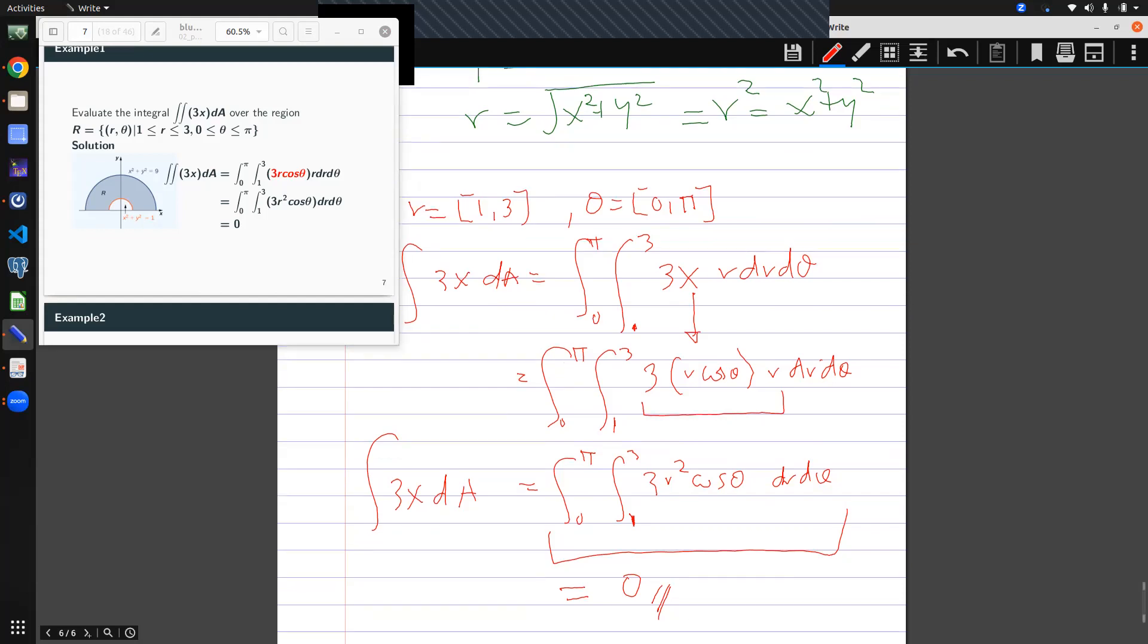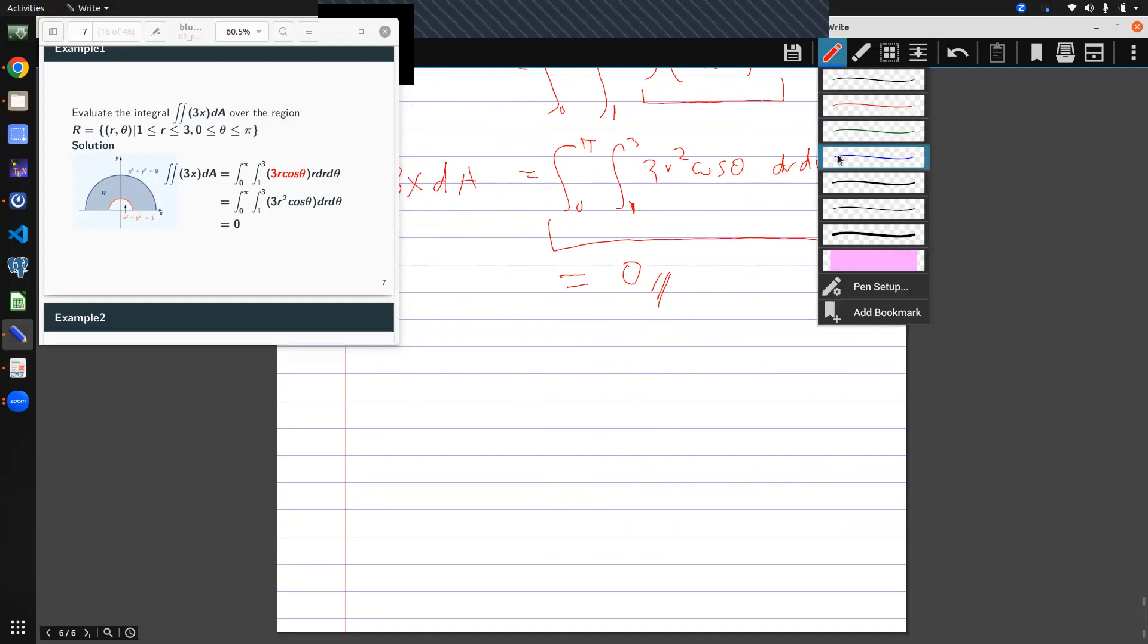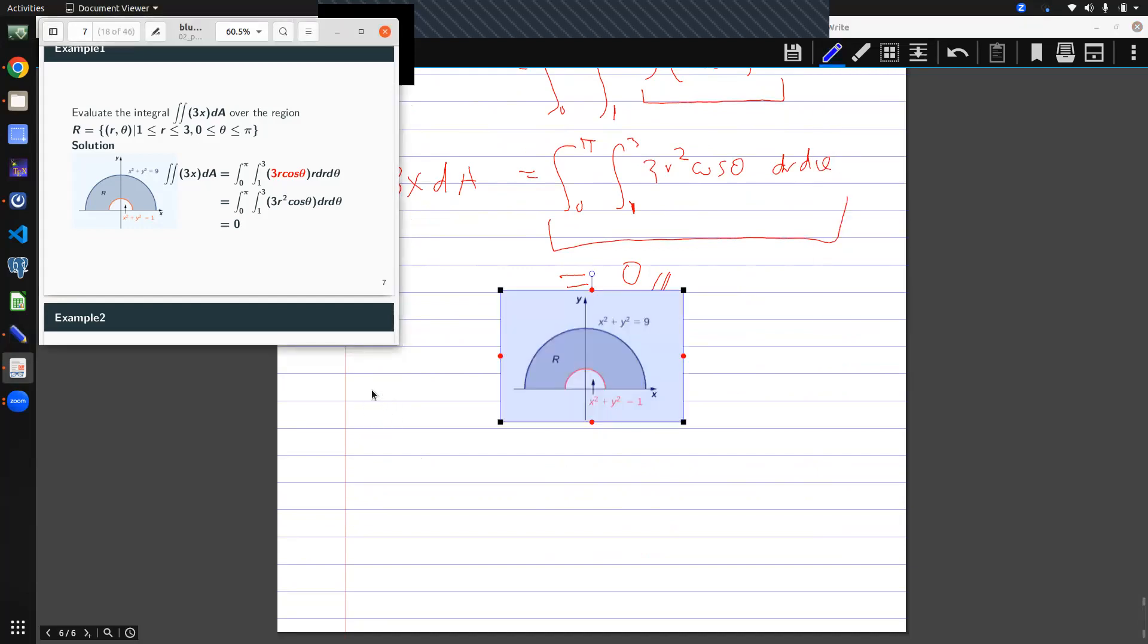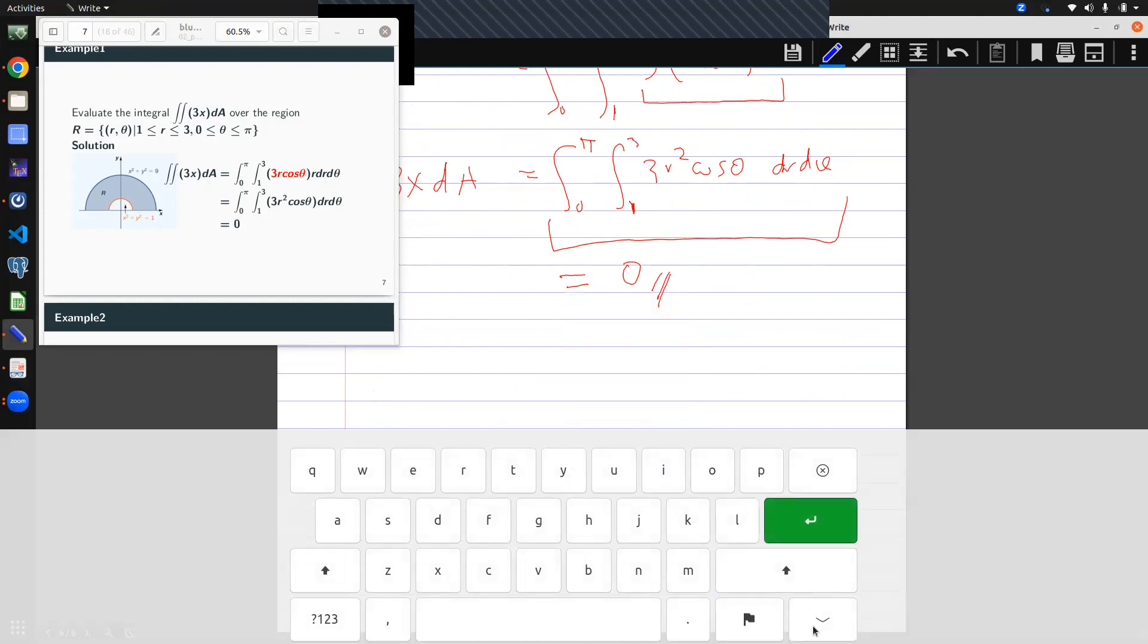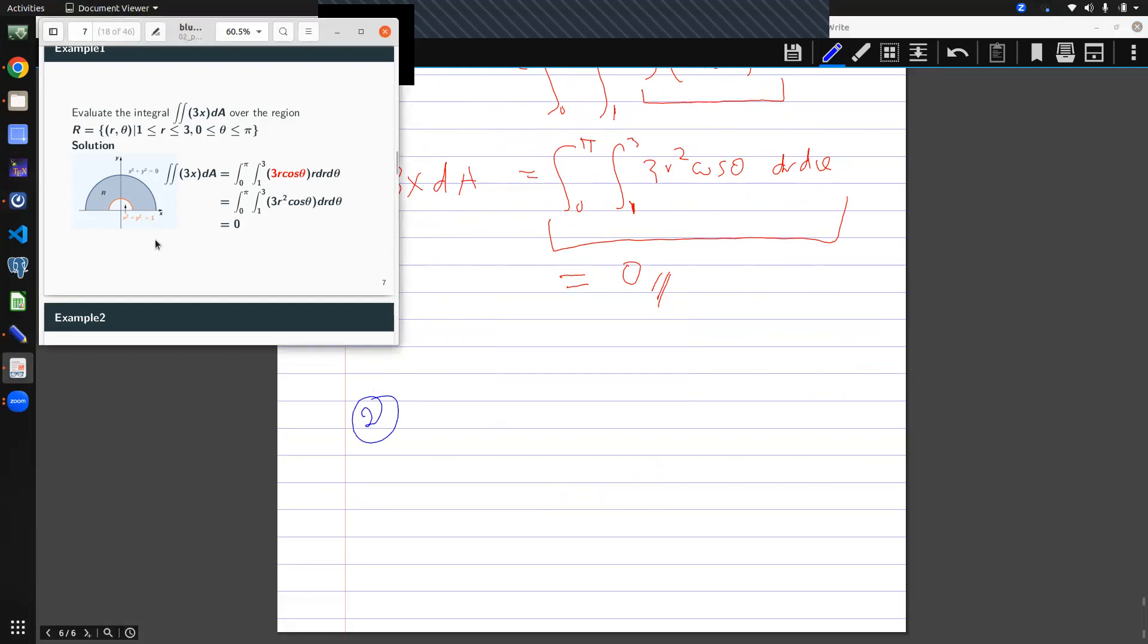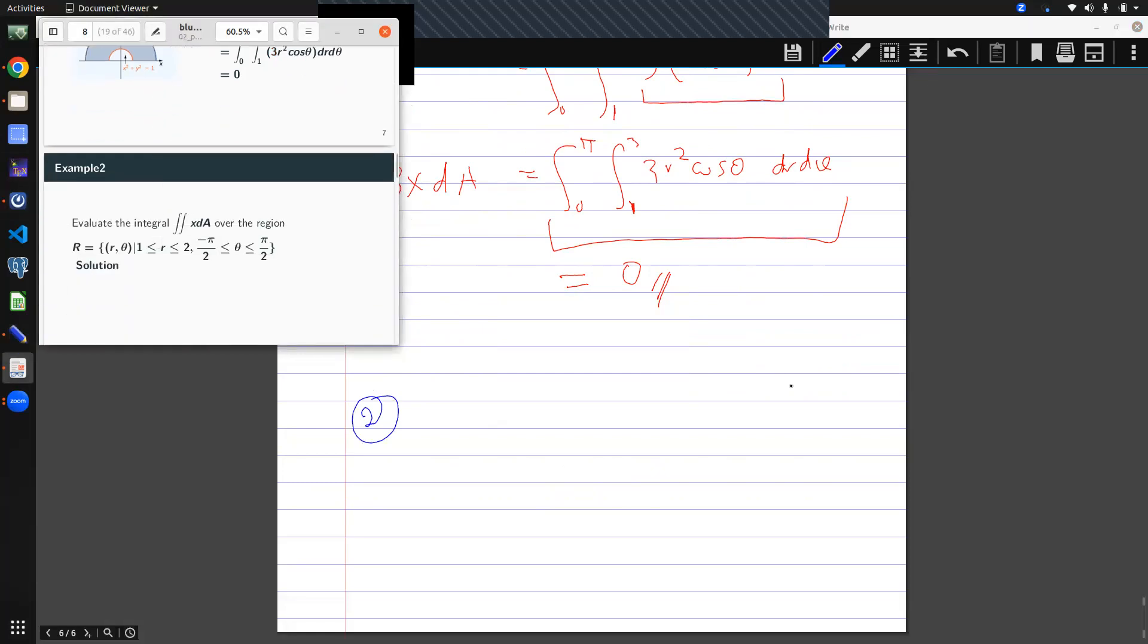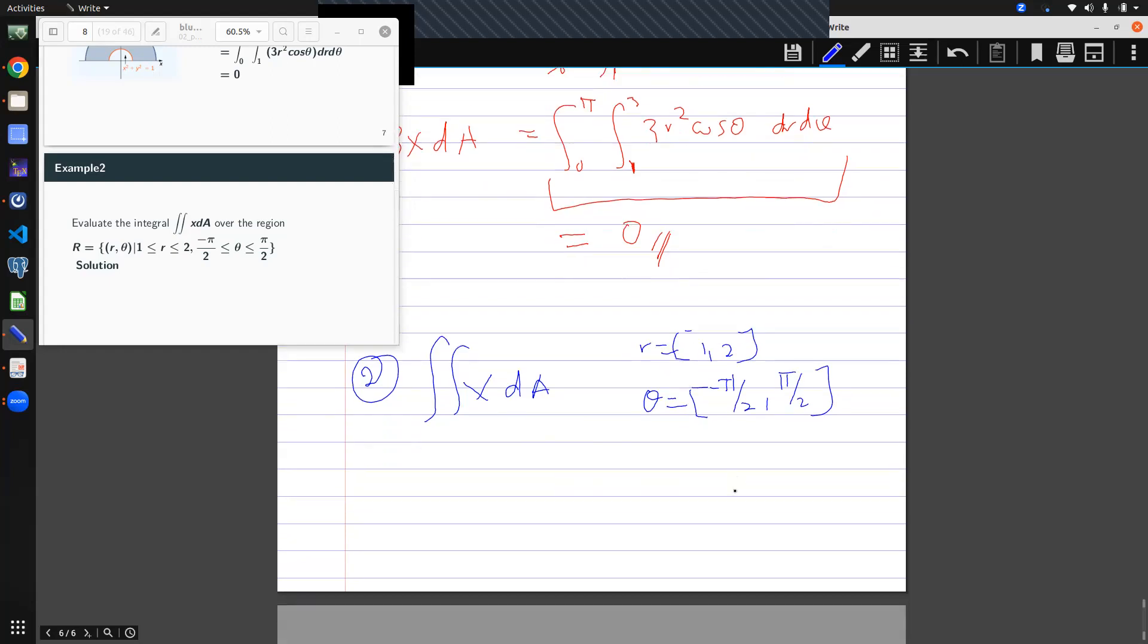The second example. Example two. What do we have? We want to integrate x dA over a rectangular polar where r is giving us one to two and then theta is giving us negative pi on two, pi on two. Again, what do you do? This is so simple to do. I already have the limits given. So a matter of substitution. Negative pi on two and then positive pi on two, one to two. What is x?